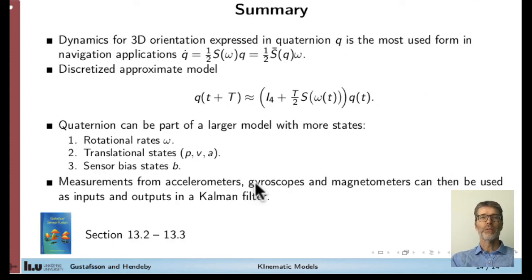To sum up, what you really need to know for the elaboration is the relation between the quaternion derivative and the quaternion self and rotational rates taken from the gyroscopes. This can be written in two ways. You need both of them in the implementation. You need to discretize the quaternion dynamics into discrete time so you can apply the Kalman filter. In a bigger perspective, the quaternion is one part of the state vector in an inertial navigation system where you have rotational rates, position, velocity, acceleration, and bias as other states. To support this state-based model, you need sensors. Most commonly in inertial navigation systems, you have accelerometers, gyroscopes, and magnetometers, and further sensors to stabilize the drift over time. Reading advice for this part is section 13.2 and 13.3.